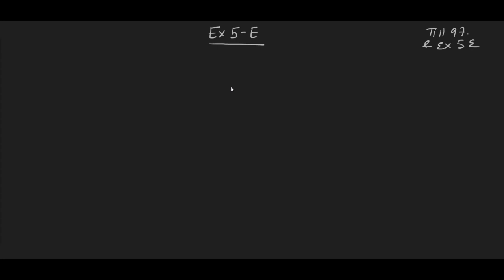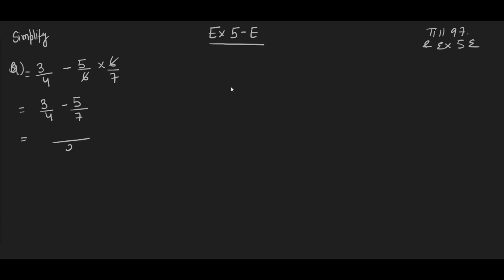Going into the exercise, question number one says: simplify 3/4 minus 5/6 into 6/7. The 6 and 6 will be cancelled, leaving 3/4 minus 5/7. Take the LCM now. LCM of 4 and 7 will be 28. So the answer is 1 upon 28.